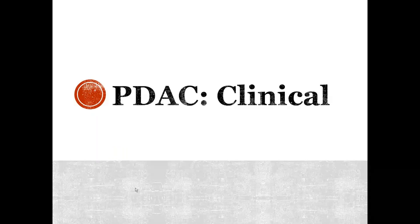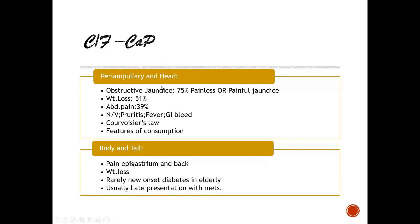The clinical manifestations of PDAC depend on location. For periampullary and head region tumors, 75% present with obstructive jaundice, 51% have weight loss, 39% have abdominal pain, and others have nausea, vomiting, pruritus, fever, and GI bleed. Courvoisier's law — that obstructive jaundice with a palpable gallbladder is probably not due to stone — should now be called Courvoisier's statement, as it is no longer considered a law.